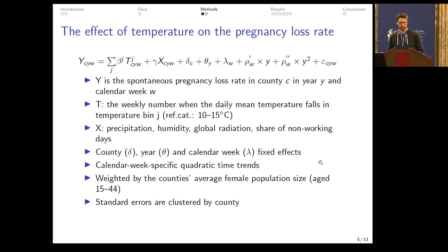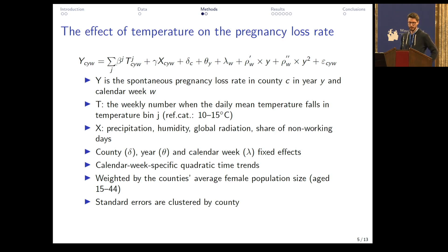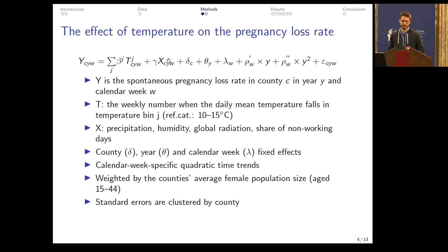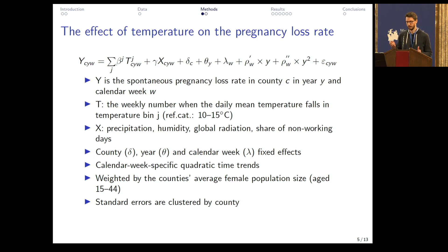This is the equation we estimated. On the left-hand side, you can see the spontaneous pregnancy loss rate in county C, year Y, and calendar week W. On the right-hand side, the variables of interest are the T's. Precipitation, humidity, global radiation, and the share of non-working days are controlled for. In the baseline specification, we have county, year, and calendar week fixed effects, and we allow seasonality to change over time by introducing calendar week specific quadratic time trends.